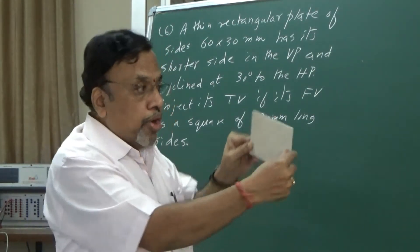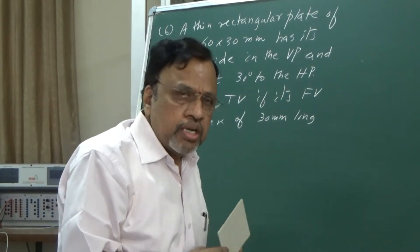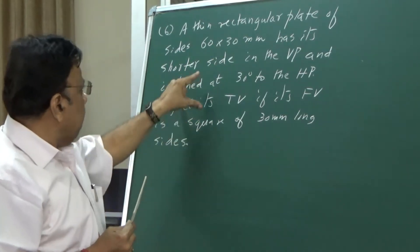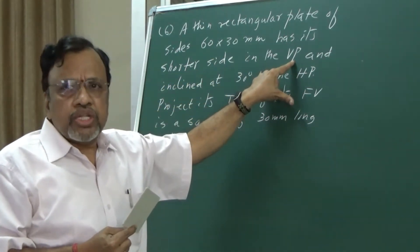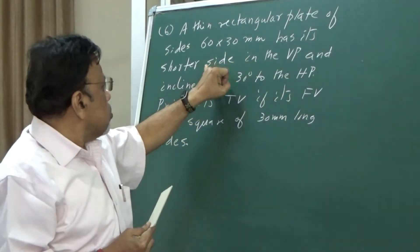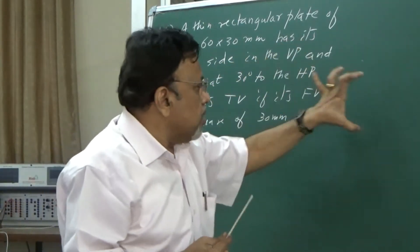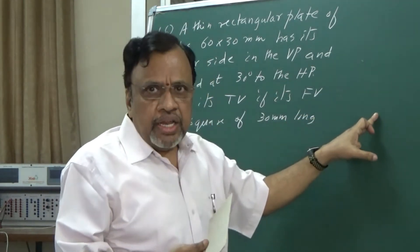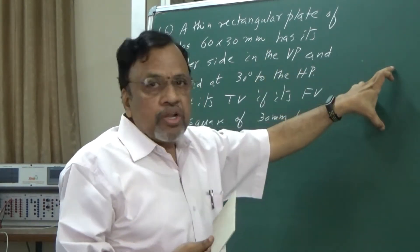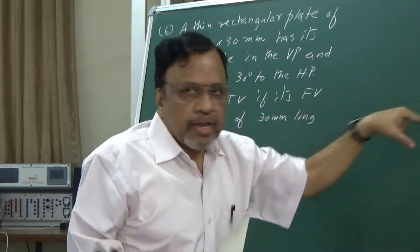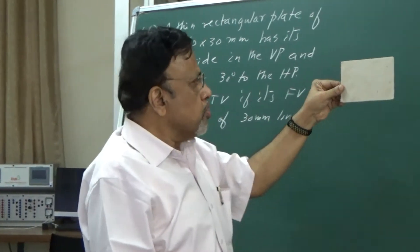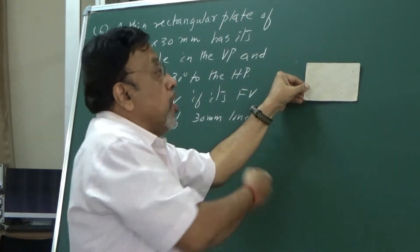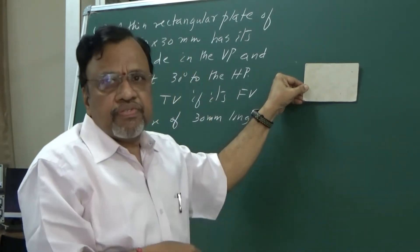How do you draw the front view? Orientation is important. It is given that this thin rectangular plate has its shorter side in the VP. Since one of the shorter sides is in VP, initially that shorter side in the front view should be taken perpendicular to the XY line — that is, that particular side has to be perpendicular to HP. So I will draw the rectangle here. The corresponding top view will be seen as a line on the XY line itself.